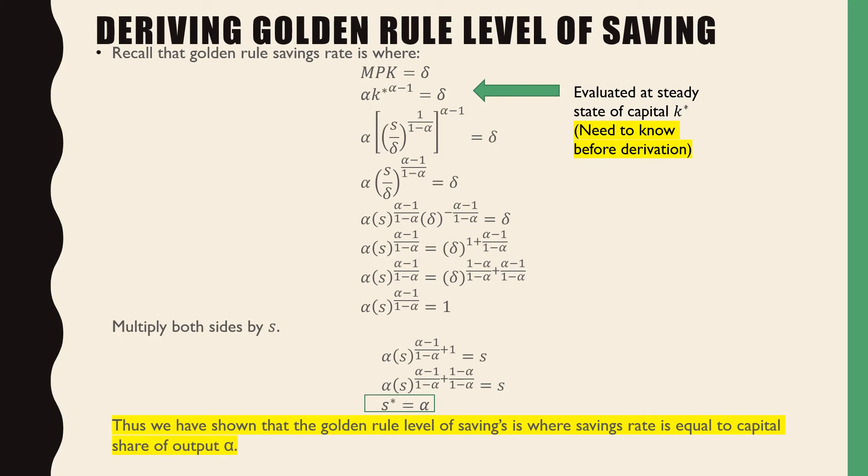Recall that our golden rule level of savings rate is where our marginal product of capital is equal to delta, our depreciation rate. Now capital K in our marginal product of capital is evaluated at the steady state level of capital K star. So you need to know that before the derivation of this, otherwise you're just not going to find this.